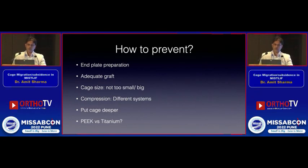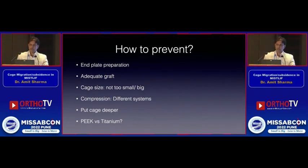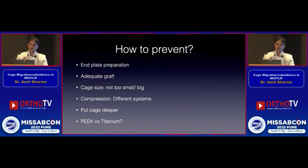For prevention: be very careful with endplate preparation — don't cave in, but remove sufficient cartilaginous endplate so fusion can occur. Put adequate bone graft, but not so much that there's no space for the cage. The cage should be sufficiently seated within the disc space.